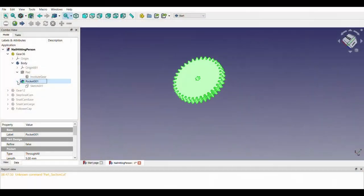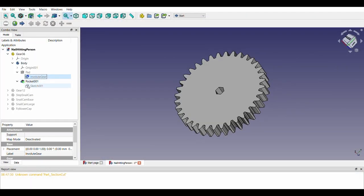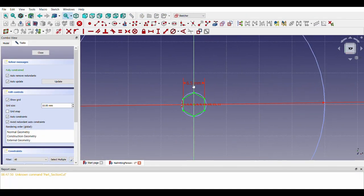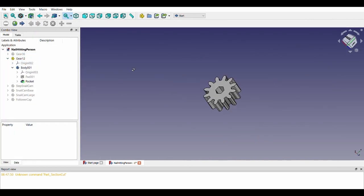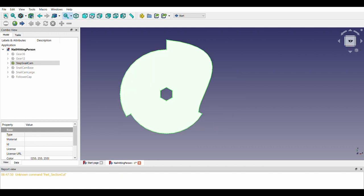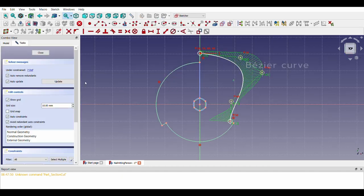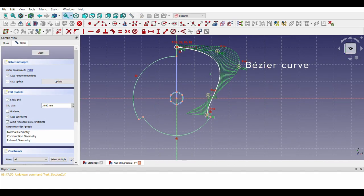The design for this automaton was done in FreeCAD 0.2 using part design workbench. Here the bezier curve came handy to reset the nail to the original position.